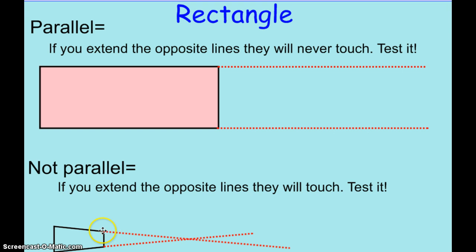But for example, in this shape, if I extend the lines, eventually they would intersect each other or cross over, which means they would not be parallel.